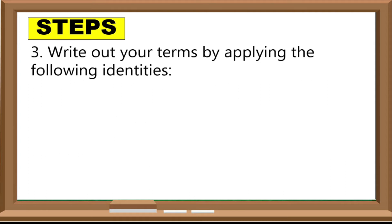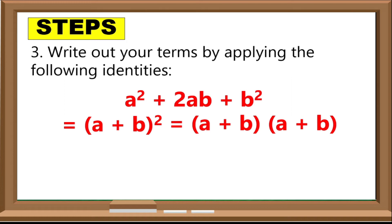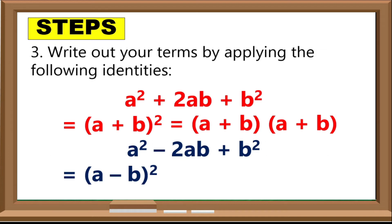Third, write out your factors by applying the following identities. A squared plus 2AB plus B squared is equal to the square of the quantity (A + B), or we can write it as (A + B) times (A + B). Or, A squared minus 2AB plus B squared is equal to the square of the quantity (A − B), or we can write it as (A − B) times (A − B).